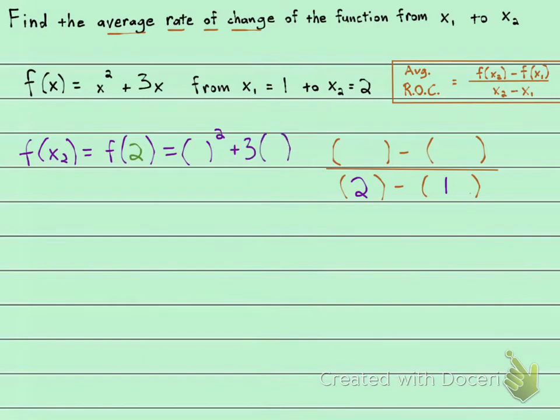So that would be right here and right here. 2 squared is 4, plus 3 times 2 is 6. 4 plus 6 is 10.